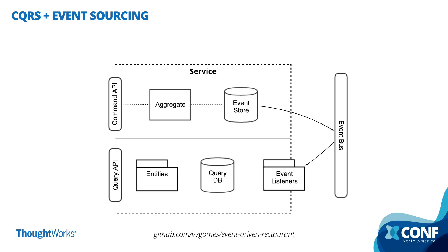In a CQRS application, we're going to have on the top one data model — the Command Model — and on the bottom the Query Model. The responsibility of the Command Model is writing data, and the responsibility of the Query Model is reading data. On the Command Model, we're going to have an Event Store because we're using Event Sourcing. So you're not going to store only the current state of the application, but we're going to store a sequence of events so that we can rebuild the current state of the application in memory using an aggregate.